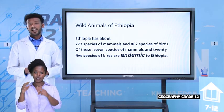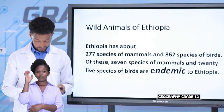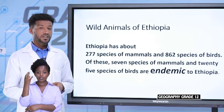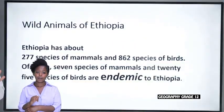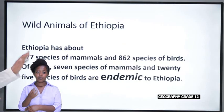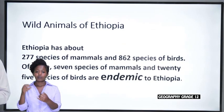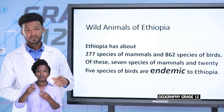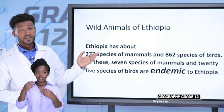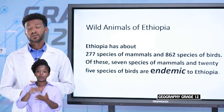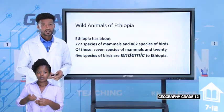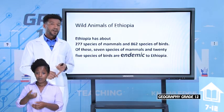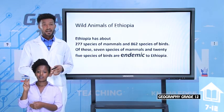Now let's come to another topic: the wild animals of Ethiopia. Ethiopia has high amounts of wild animals. Specifically, Ethiopia has 277 species of mammals and 862 species of birds. From these species, 7 mammals and 25 birds are endemic to the country.